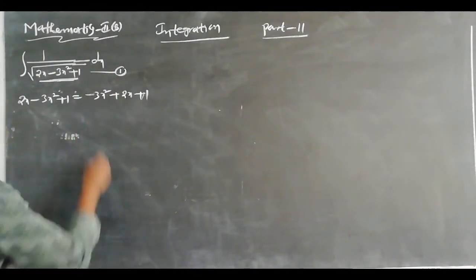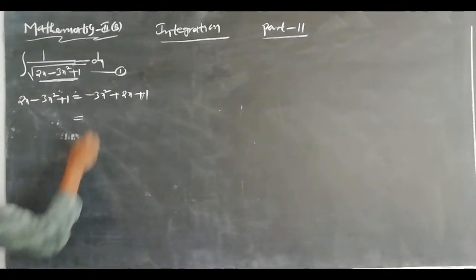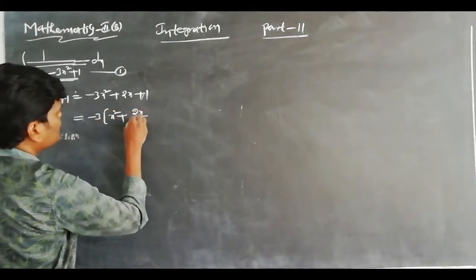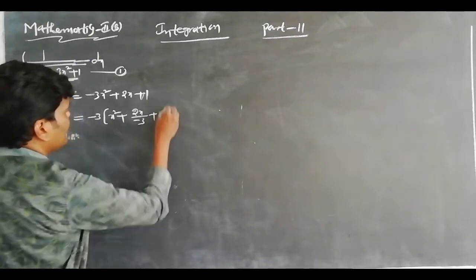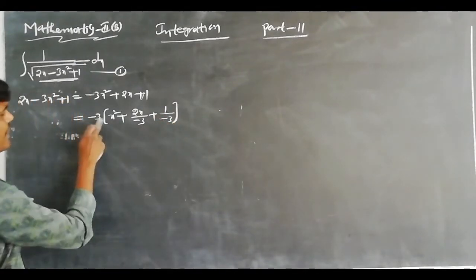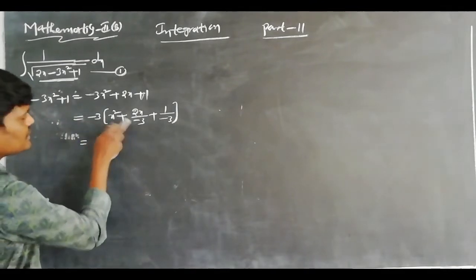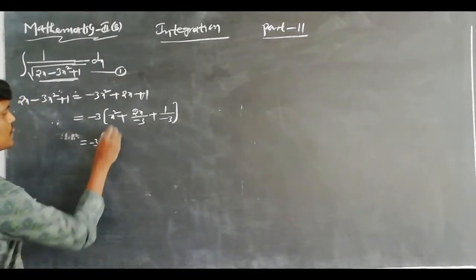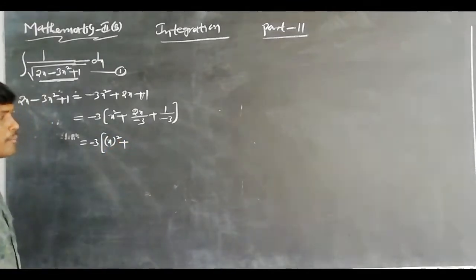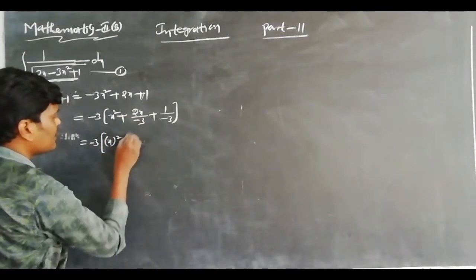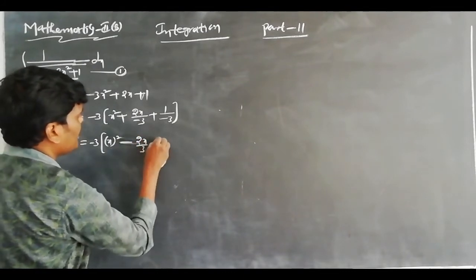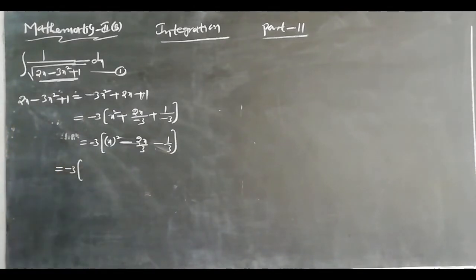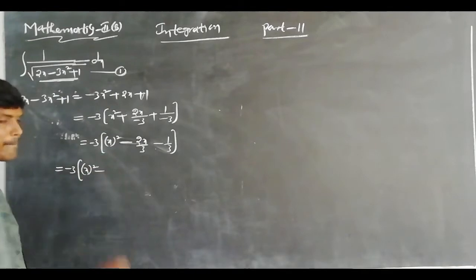First step: the coefficient of x² is -3, so factor out -3 from the quadratic. That gives -3(x² - 2x/3 - 1/3). Now we need to complete the square. We have x² - 2x/3, where a = x and b = 1/3. We add and subtract b² = (1/3)² to complete the square.